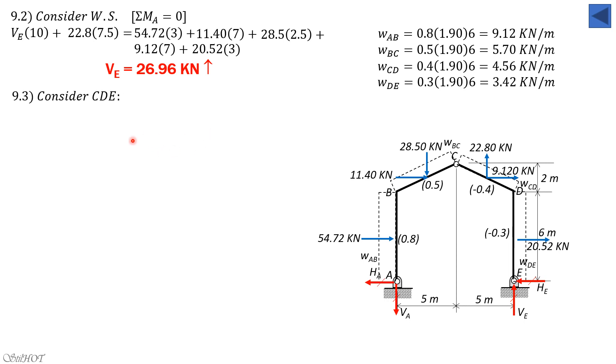Next, we consider portion CDE to solve for horizontal reaction of E by summing moment about C, because this is a three-hinged arch. So considering clockwise positive, horizontal reaction of E by summing moment about C equals 0. So H_E times 8 equals (the rest is counterclockwise) beginning with 20.52 times 5 (the moment arm is 5), plus 9.12 times 1, plus 22.8 times 2.5, plus V_E which is 26.96 times 5. So H_E is 37.94 kilonewtons.